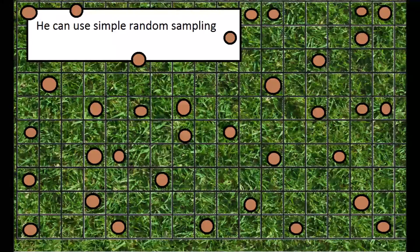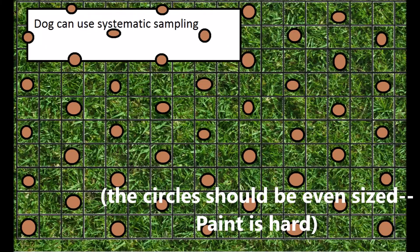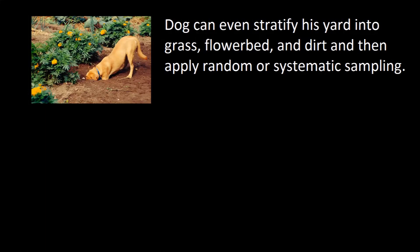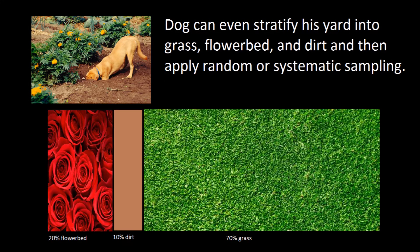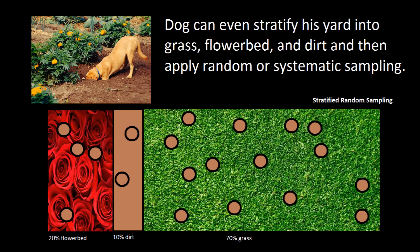He can use random sampling. Dog can use systematic sampling. Dog can even stratify his yard into grass, flower bed, and dirt, and then apply random or systematic sampling.